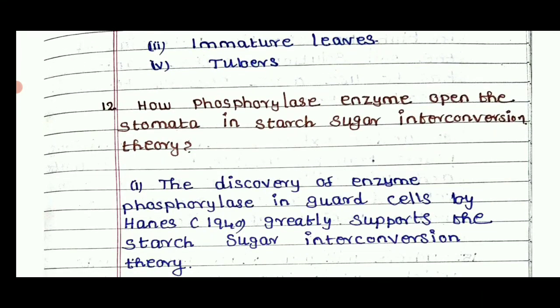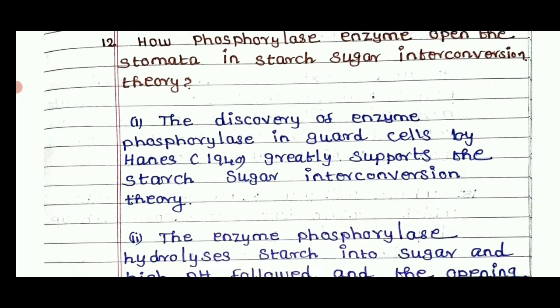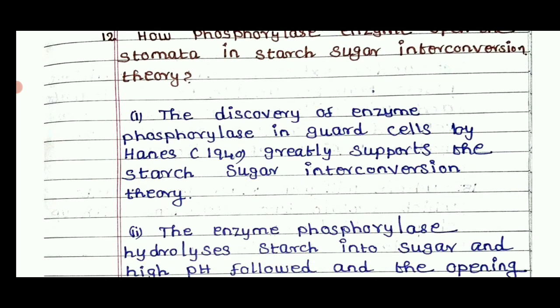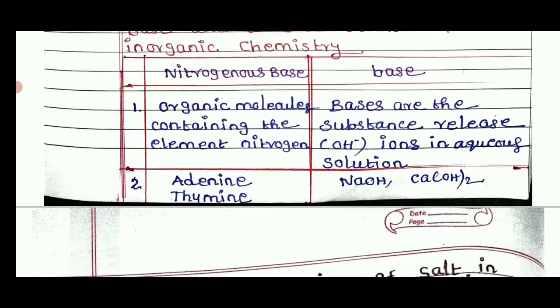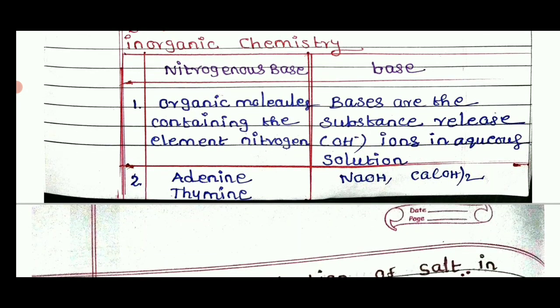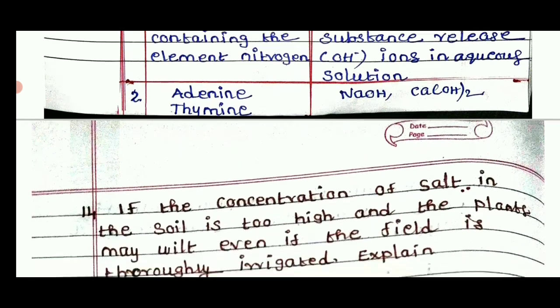The next one: how do phosphorylase enzymes open the stomata in starch-sugar interconversion theory? The discovery of phosphorylase enzyme in guard cells greatly supports the starch-sugar interconversion theory. The difference between nitrogenous base and the base found in inorganic chemistry is covered in the last chapter.